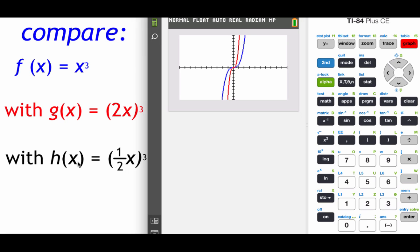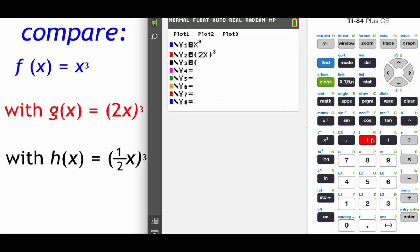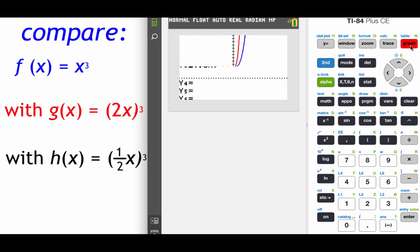Now if we type in this next one, h(x) equals 1 half x cubed. I'm going to use 0.5 as the half just to make it a little bit easier to type in. So 0.5 x cubed. If we graph that one out and compare it, this time the sides of our graph are a lot wider out. So we horizontally stretched this graph out.